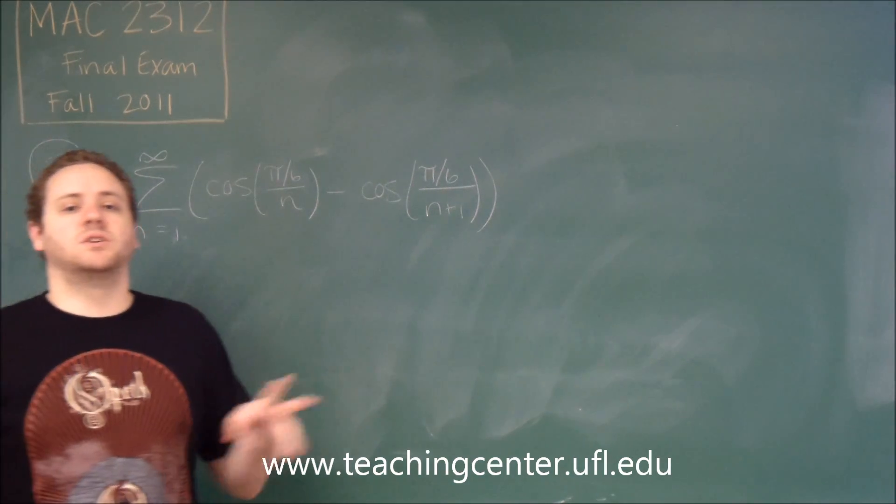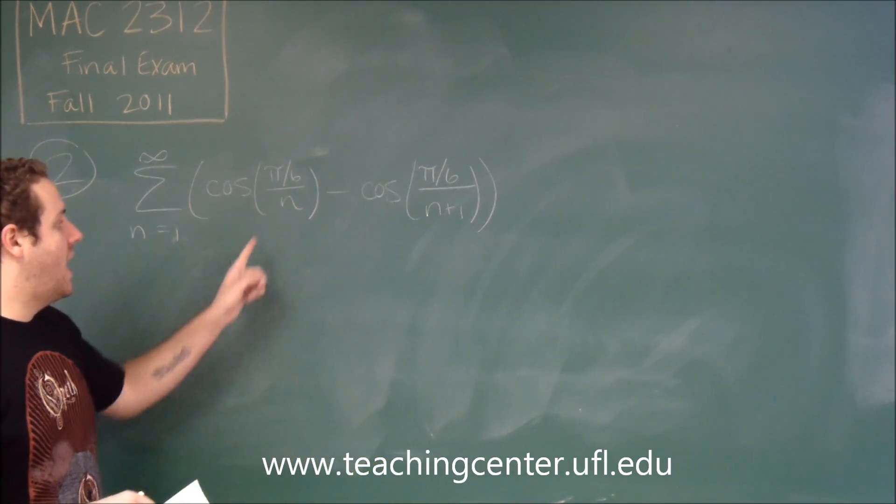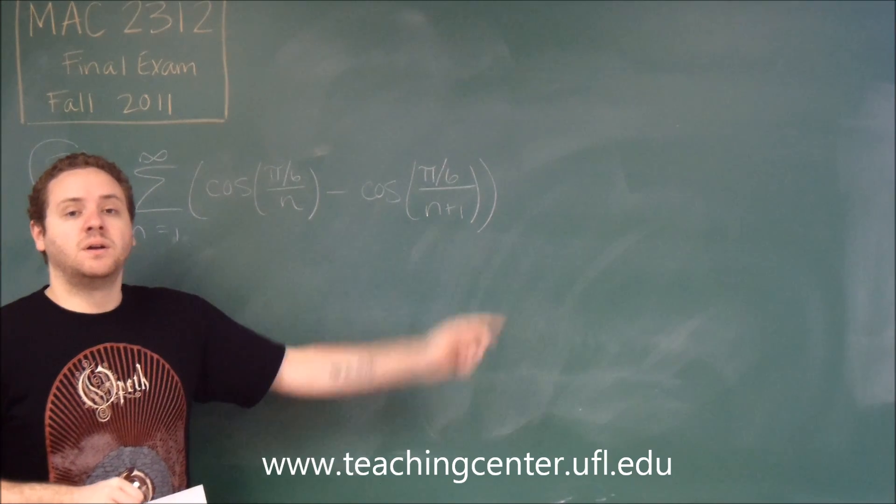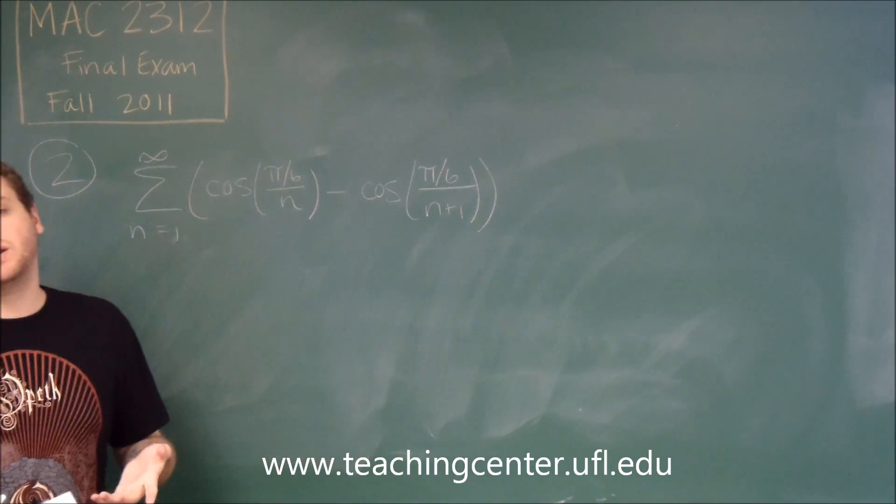Remember for a telescoping series, what you want to do is just write out the first couple terms. You'll get to see that lots of things cancel out, and depending on how far the shift was, in this case it's only 1, n to n plus 1, that tells you how many terms you're going to keep at the beginning and how many terms you're going to keep at the end.